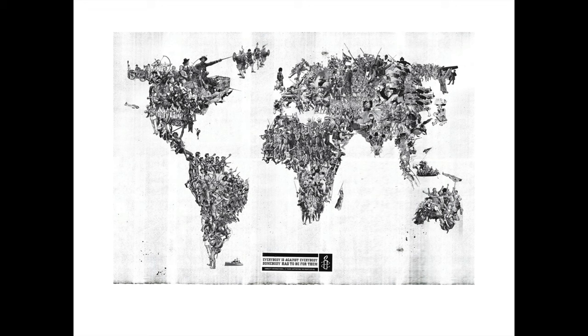We're looking at an Amnesty International poster. Amnesty International is an advocacy group for international law and peace. On this we can see a world described by images of war, that war exists in all parts of the world. The quote at the bottom says everybody is against everybody — somebody has to be for them. Under that, the subtitle says Amnesty International, 27 years of supporting the rights for all, specifically advocating for refugees of war.